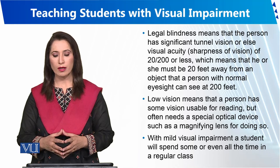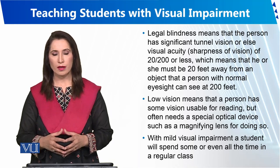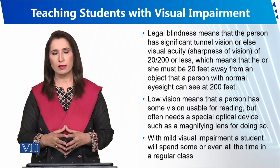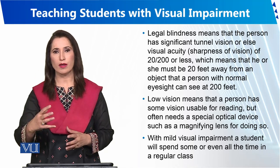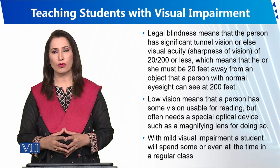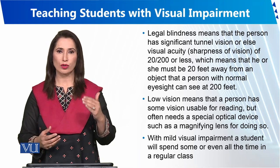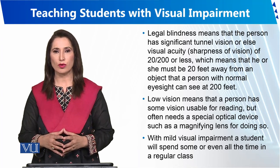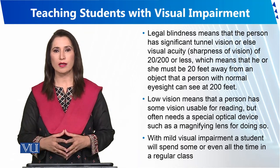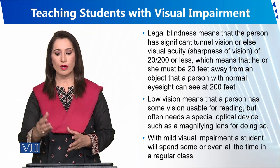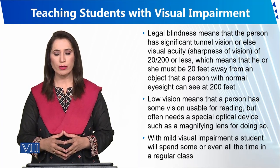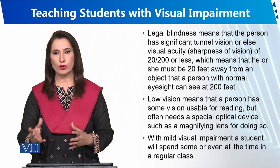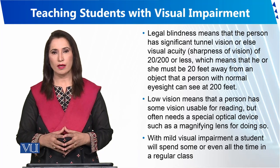There is also legal blindness, defined as 20/200 vision. This means if a person cannot see at 20 feet what a person with normal eyesight can see at 200 feet, that is considered a legal blindness impairment.